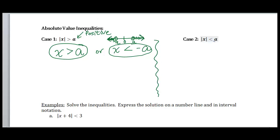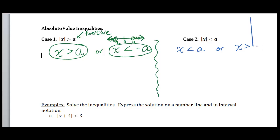For less than, we're going to do something very similar. I'm going to make my first inequality look just like what I see here. I'm going to have x is less than a, whatever number that is. Or I'm going to do the opposite — I'm going to flip this inequality to be greater than and change this sign to a negative.